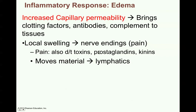There are also prostaglandins and kinins that can directly increase the pain in that area — they activate those local nerve endings. When this material gathers around this area — the inflammation and edema — the tissue fluid will then move into the lymphatics. That fluid will be taken up into the lymphatics, now called lymph, to be carried back to the circulatory system.